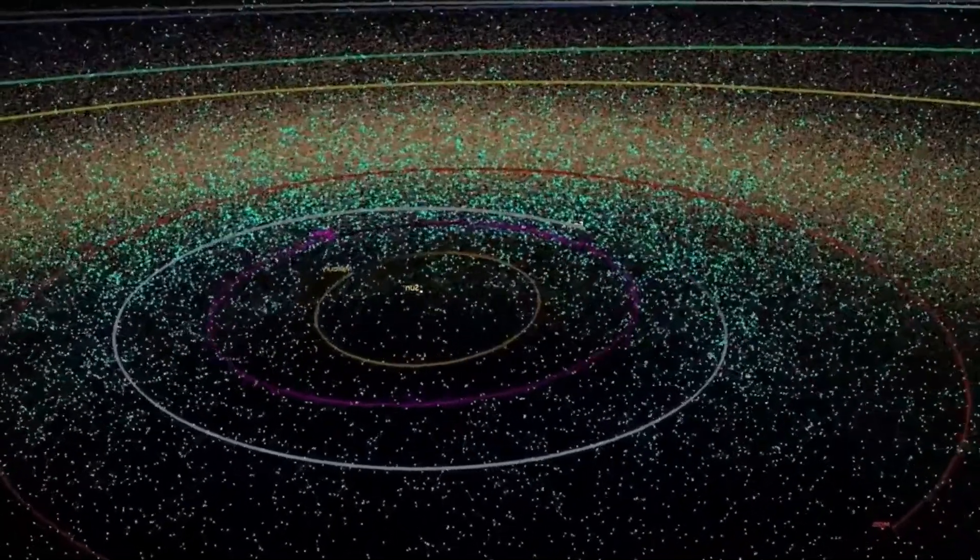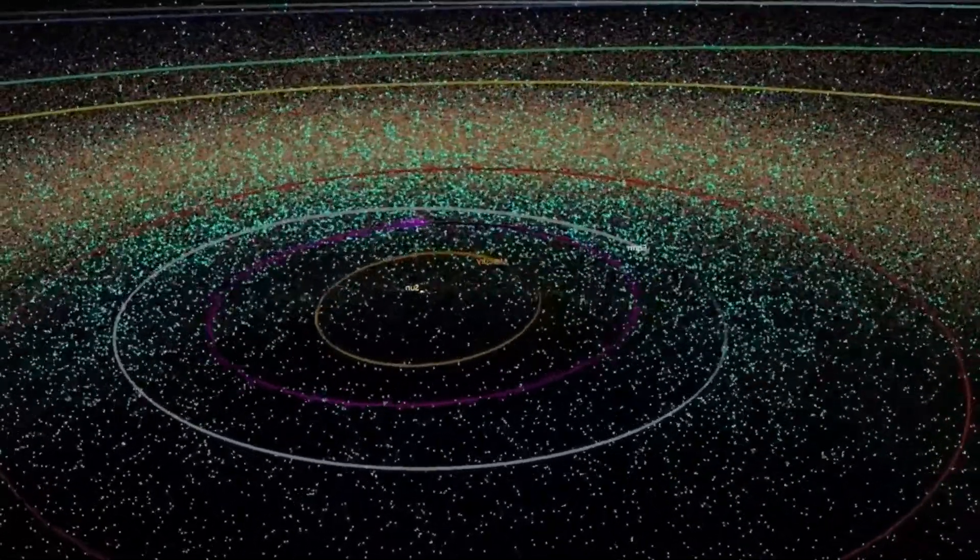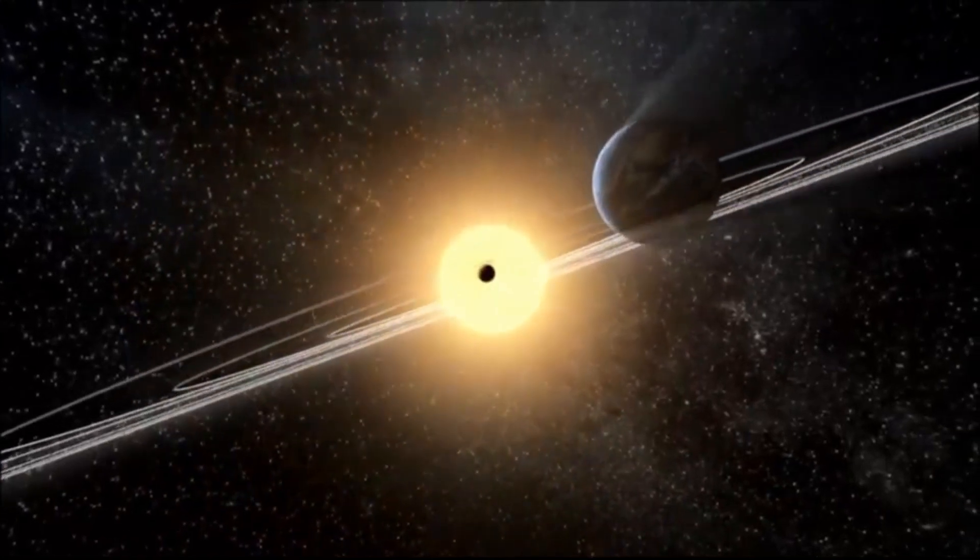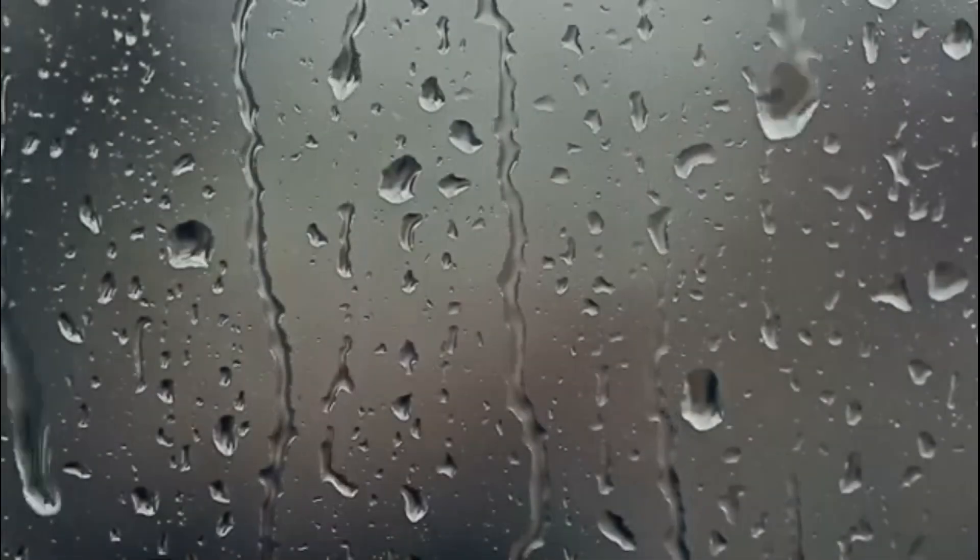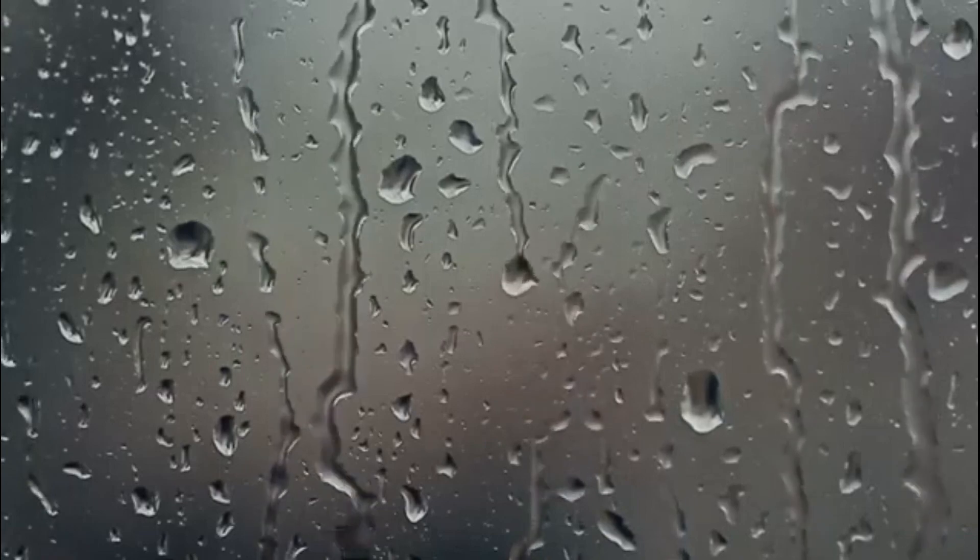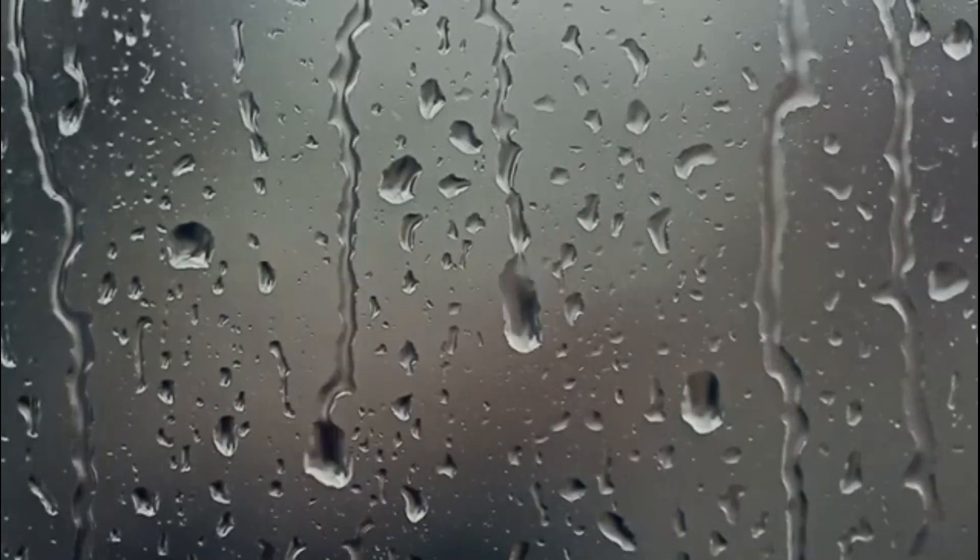The observed objects exhibit a trajectory aligned with the motion of our solar system within the spatial domain, analogous to the perception of raindrops seemingly approaching directly towards a vehicle's windshield while driving in rainy conditions.